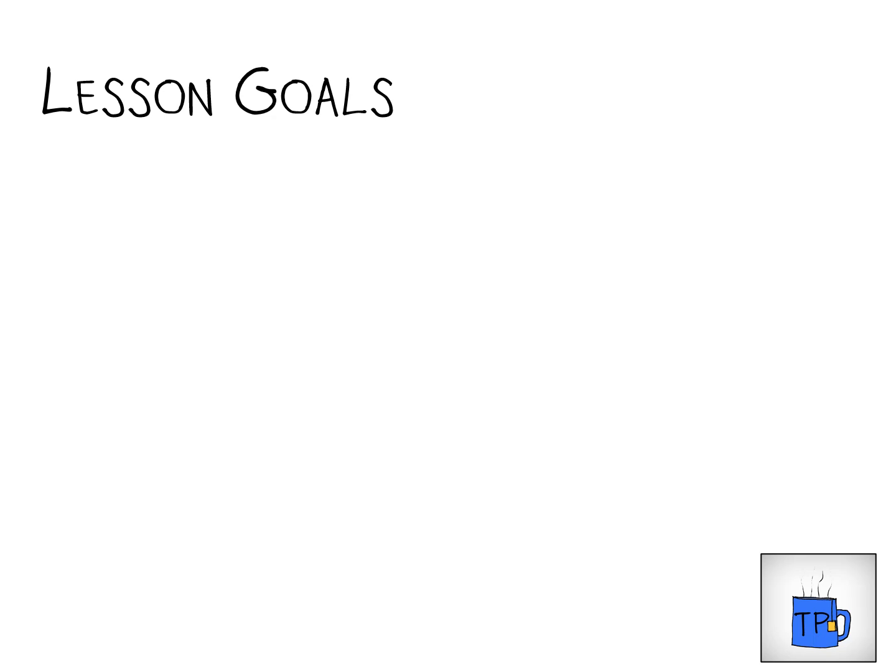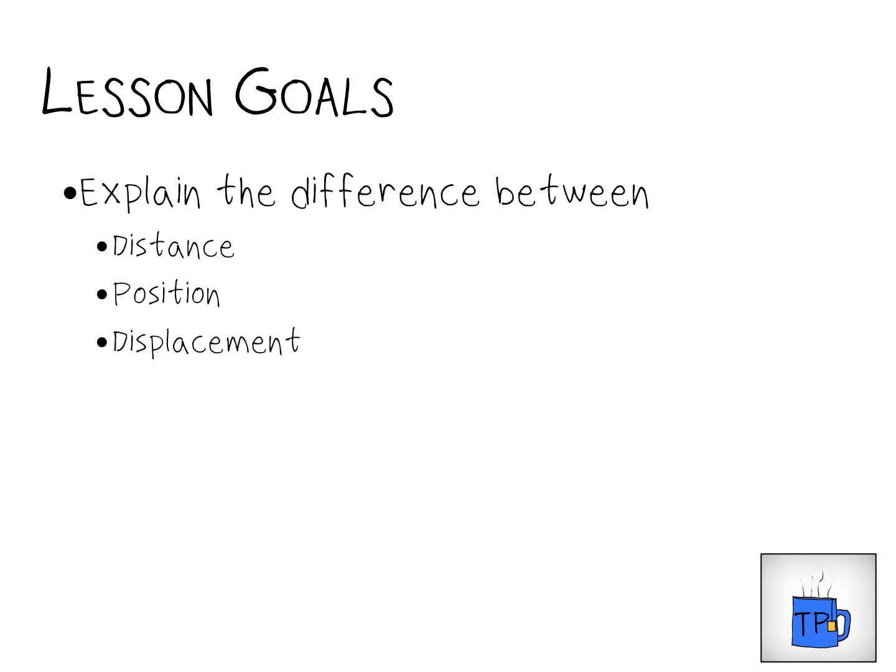The goals for this lesson are almost entirely vocabulary based — we're going to introduce a lot of new terms. You're going to understand the difference between distance, position and displacement. These are important ideas because they help us establish where objects are and where they're going, and if we can do that, we can begin to talk about motion in general, which is a lot of what we'll focus on with introductory physics.